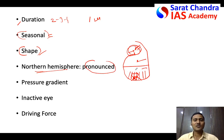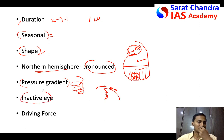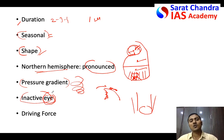Eleventh difference: pressure gradient. In tropical cyclones the pressure gradient is very steep/high. In temperate cyclones the pressure gradient is very small. Twelfth difference: the eye. In tropical cyclones, the eye has absolute calm and no rainfall — it is called the inactive eye — while around the eye there is huge rainfall. In temperate cyclones there is no inactive zone; all zones have rainfall.